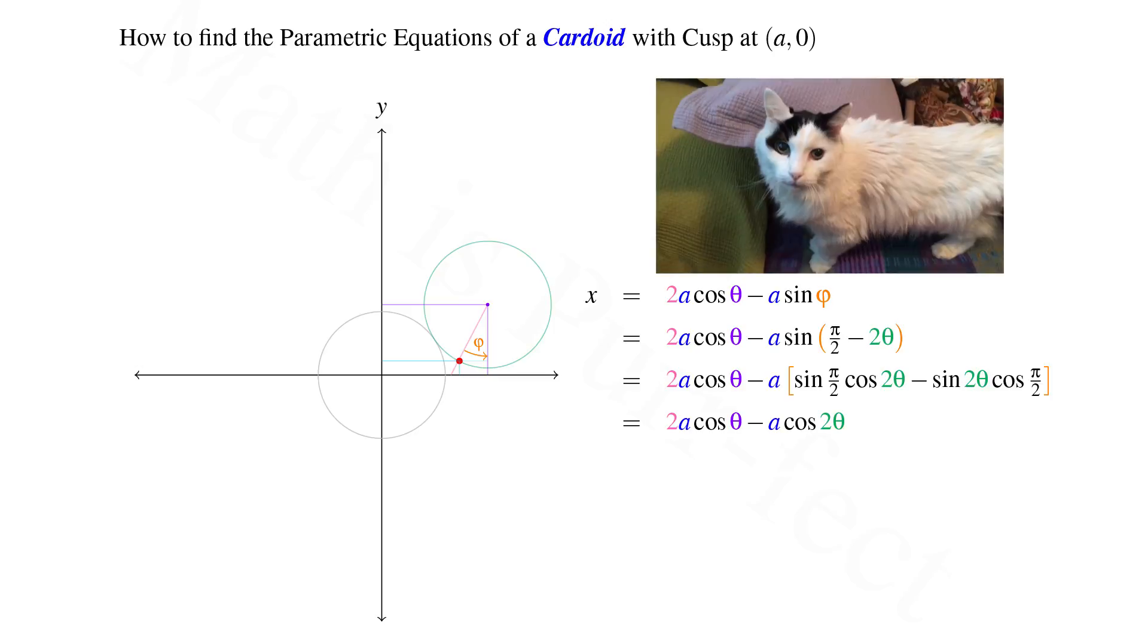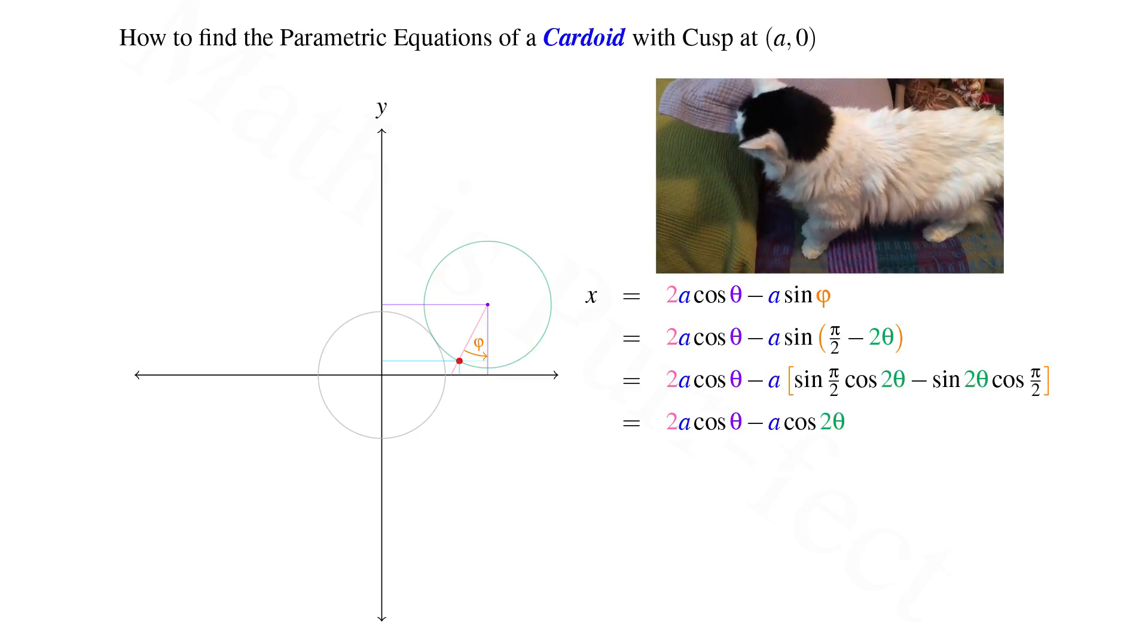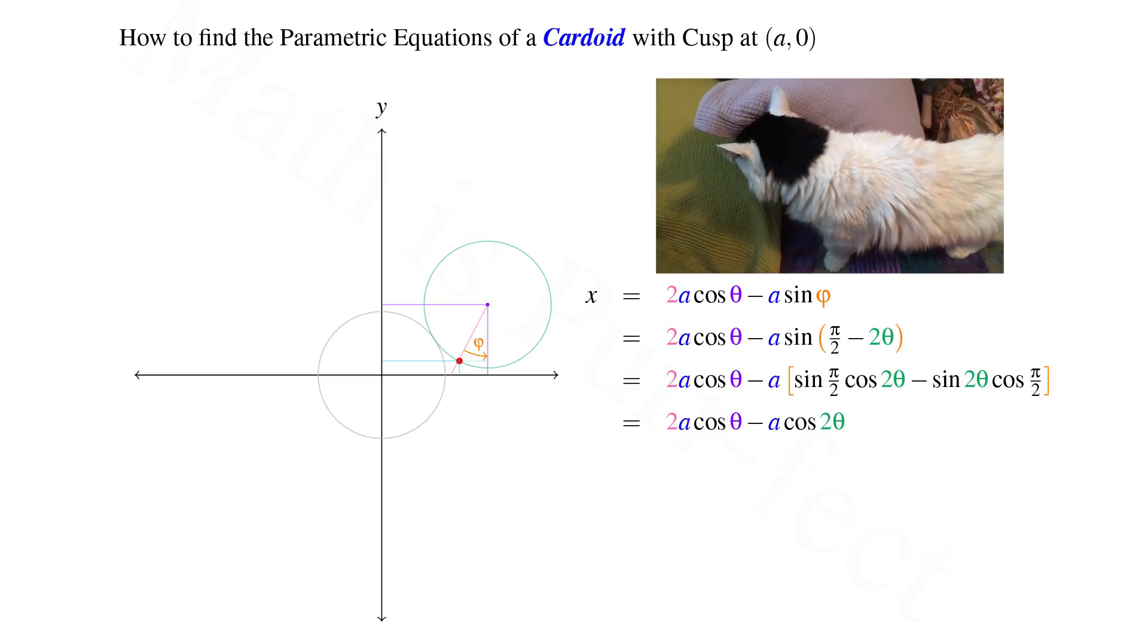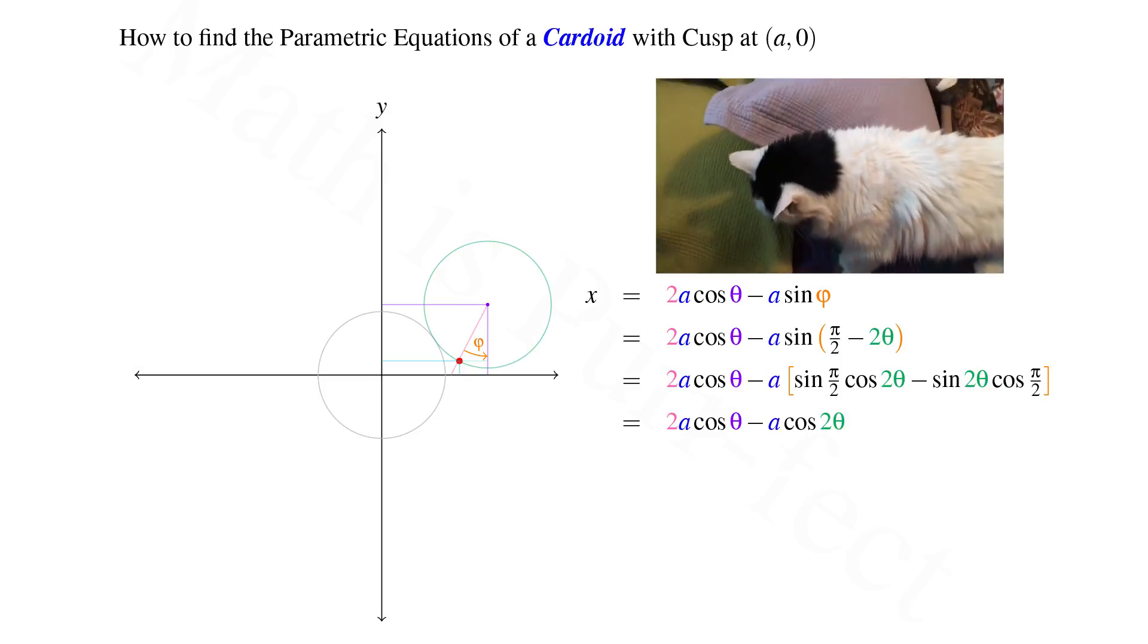Hence, the x coordinate for any point on the cardioid is given in terms of the parameter theta as 2a cos theta minus a cos 2 theta.